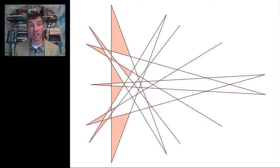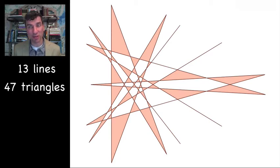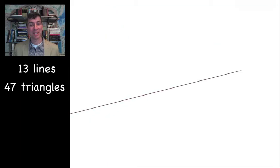But for thirteen, surprisingly, we do know that we have the best possible solution. Here it is. There might be others, but this is one of them. So the most that is theoretically possible to get is forty-seven triangles and we've got it.